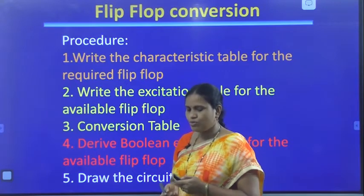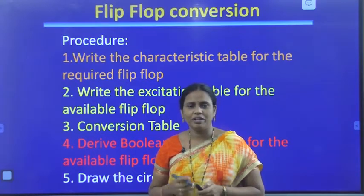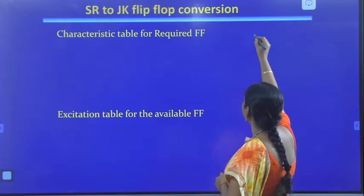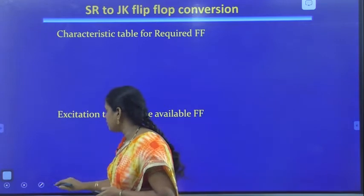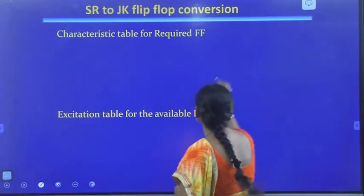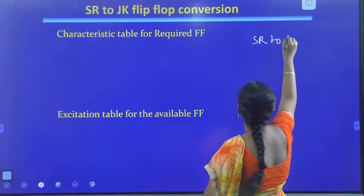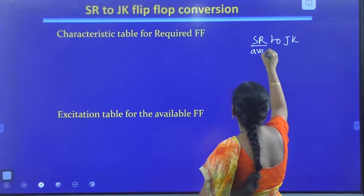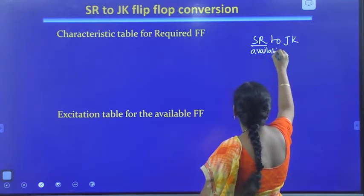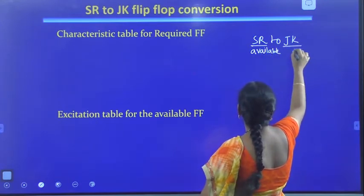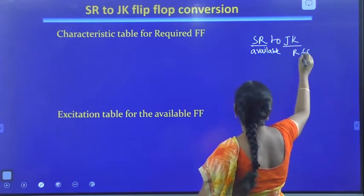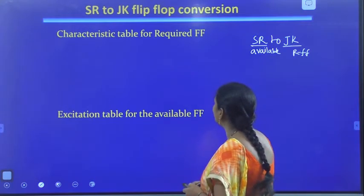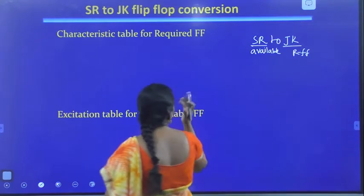For this conversion, our available flip-flop is SR and our required flip-flop is JK. So we need to convert SR to JK. First we will write the characteristic table for the required flip-flop, which is JK.